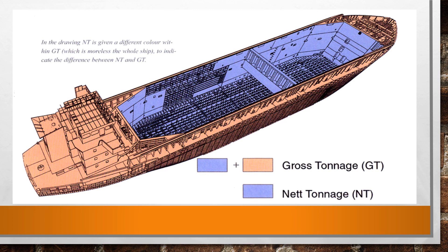The net register tonnage may not be less than 30% of the gross tonnage. The areas included in the net register tonnage basically comprise spaces which are not occupied by the crew, navigation equipment, propulsion equipment, workshops, or ballast tanks — it is essentially the cargo carrying capacity. That is what defines the net register tonnage.